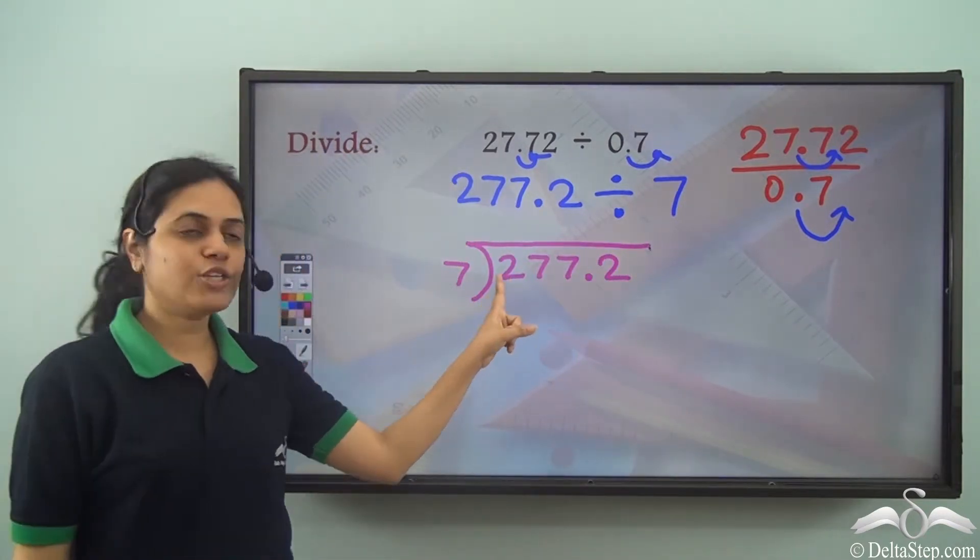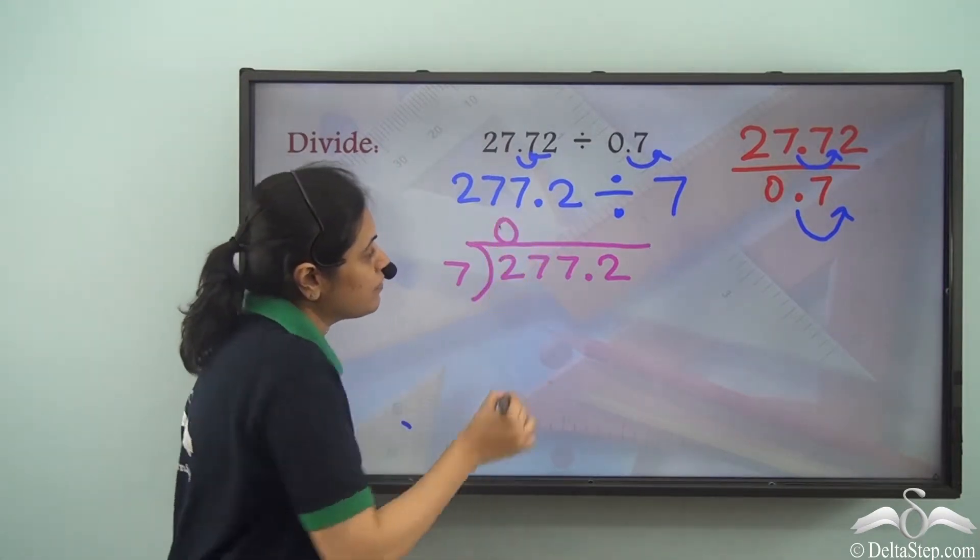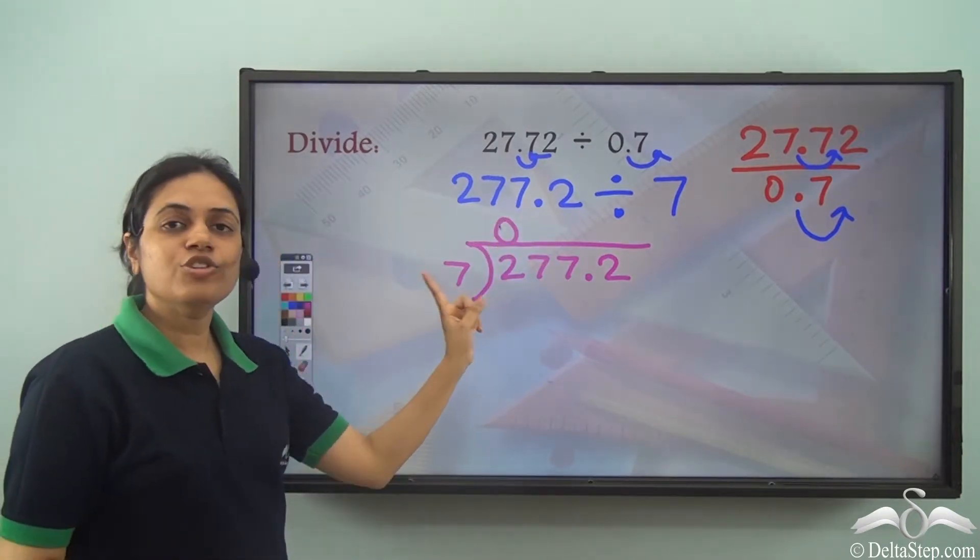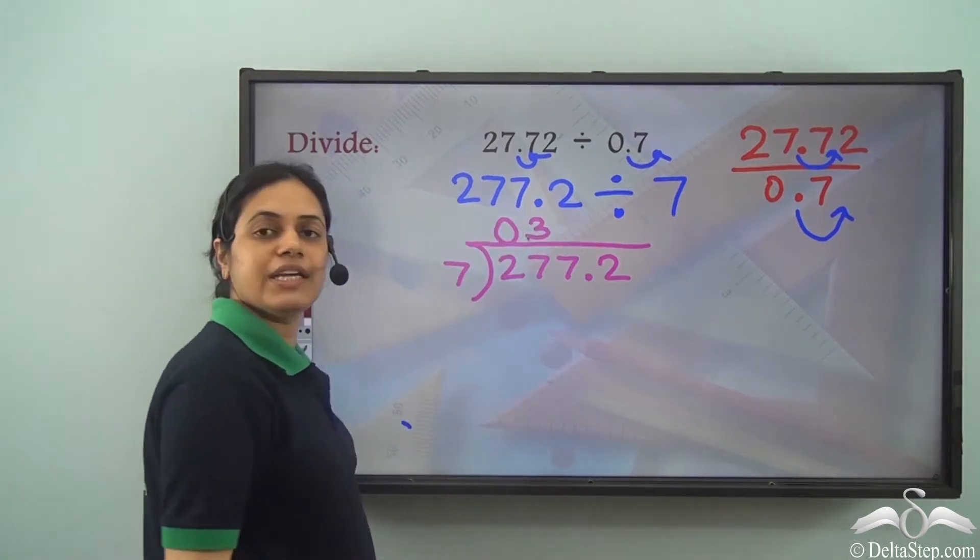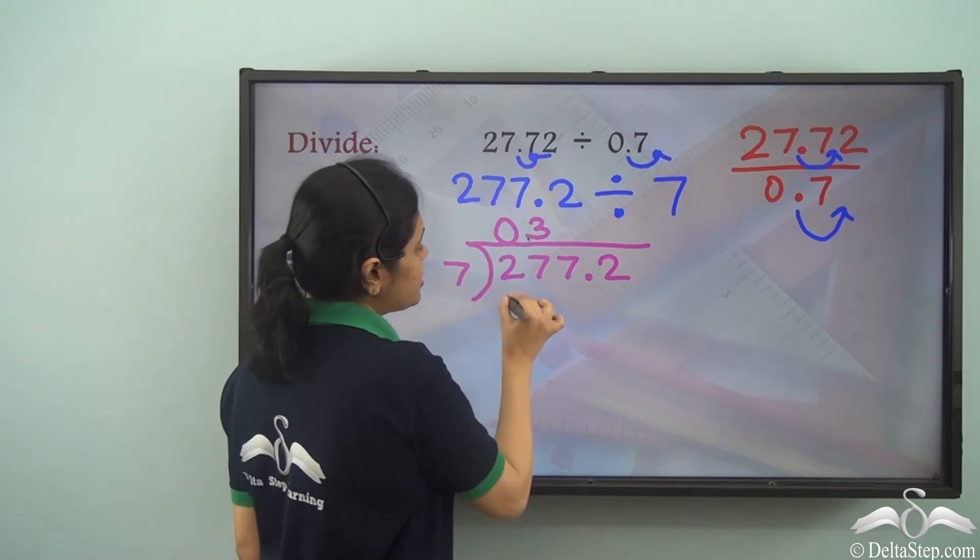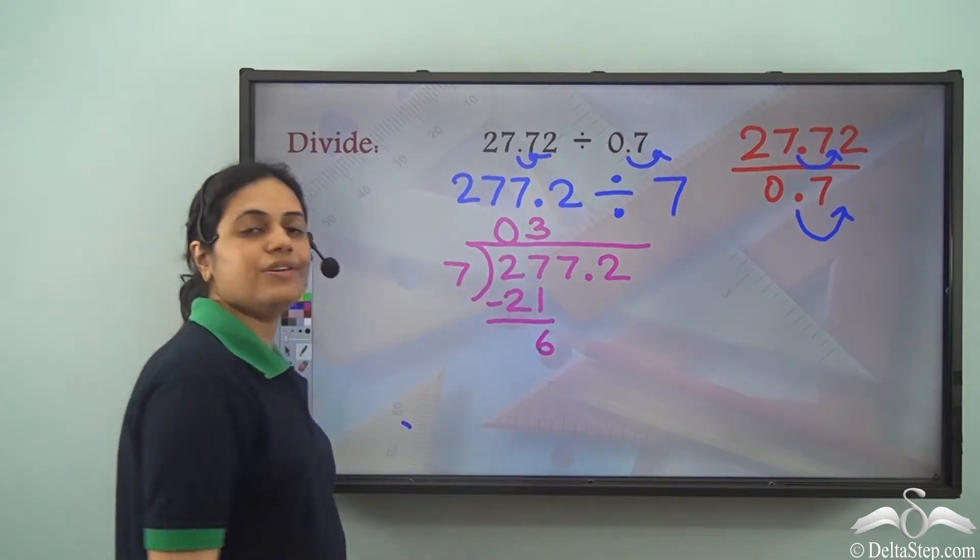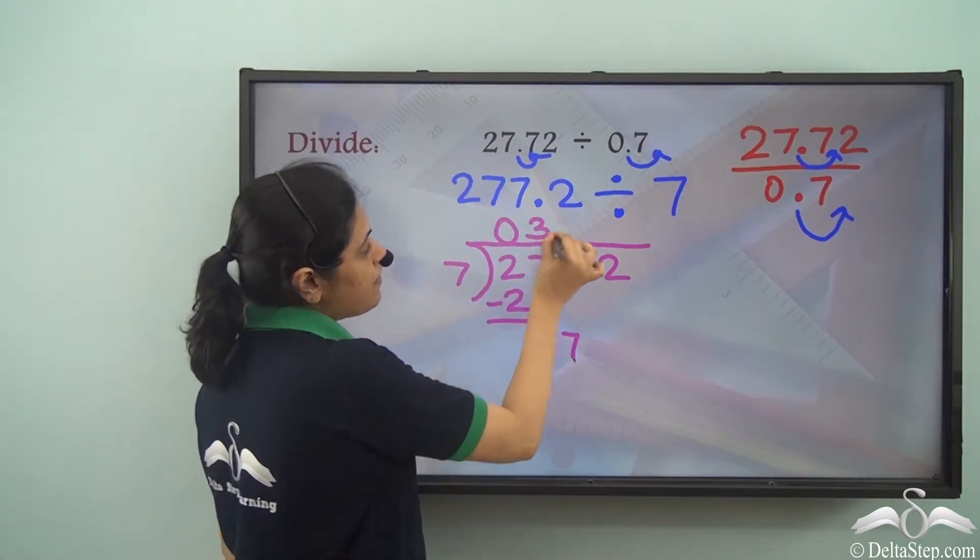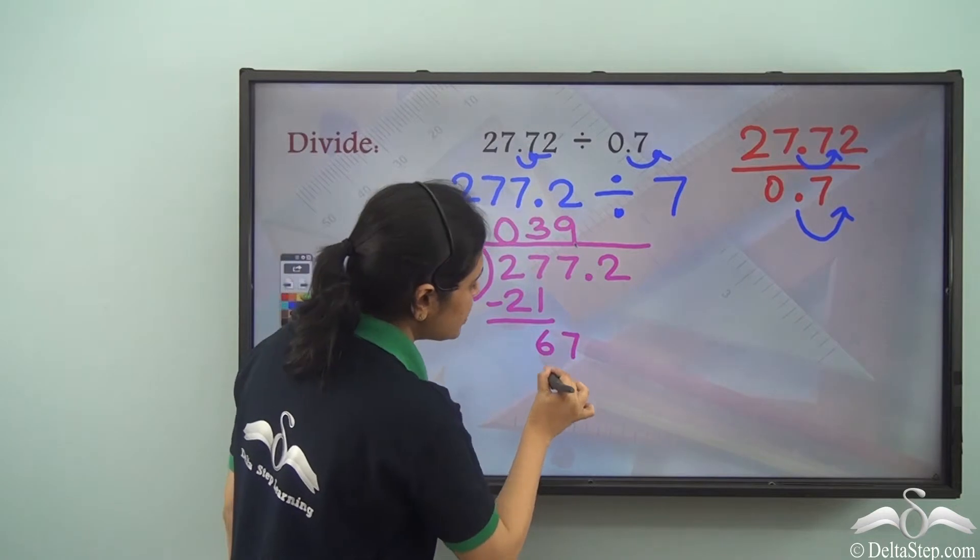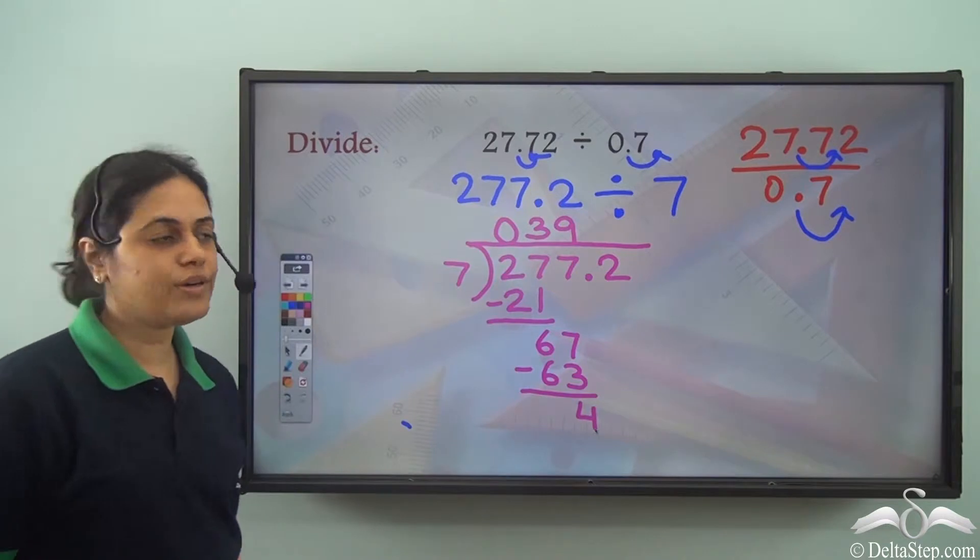So first I take 2. Now 7 goes into 2 zero times. Then I take 7. So I have 27. 7 goes into 27 three times. 3 into 7 is 21. And I have 6 here. Now I bring down this 7. 7 goes 9 times into 67. So we have 63. And there is 4 here.